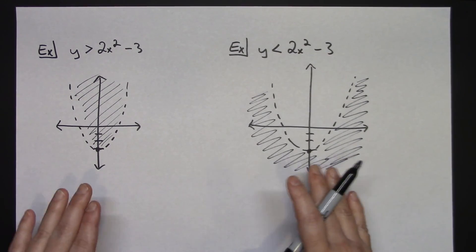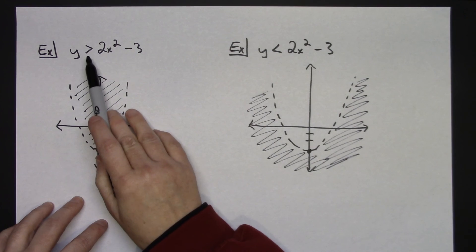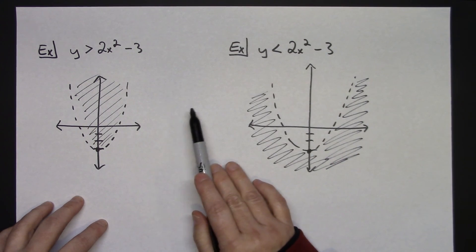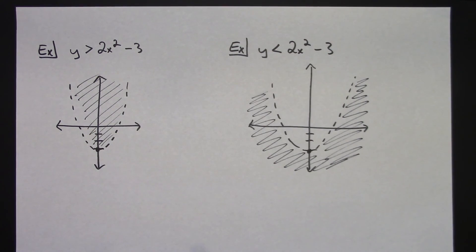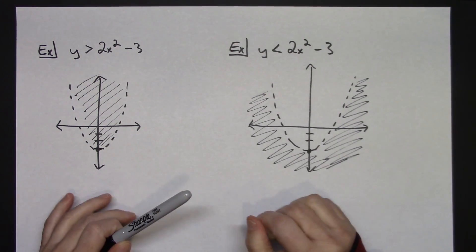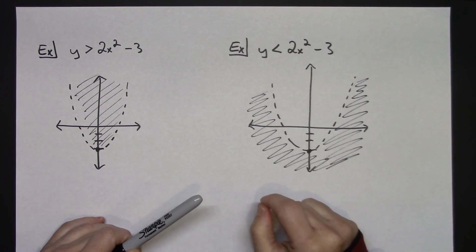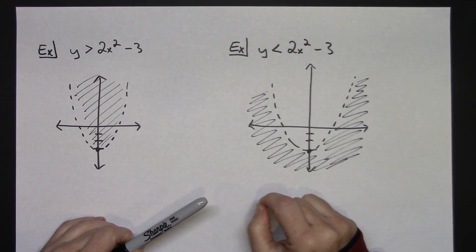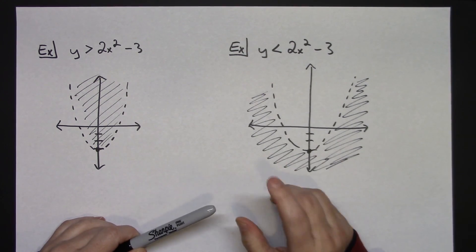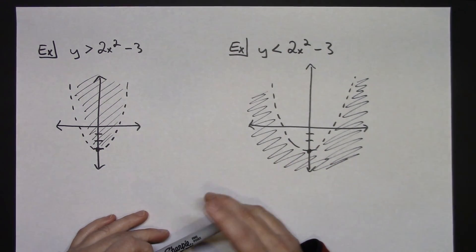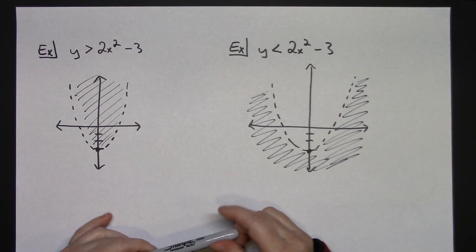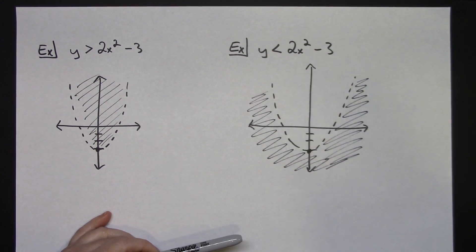Those rough sketches cover all four categories — upright and upside down parabolas with greater than or less than signs. That's a quick overview of graphing quadratic inequalities using the shortcut method so you don't actually have to make that XY table. Thanks for watching.